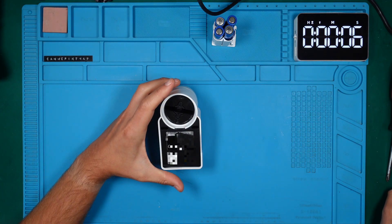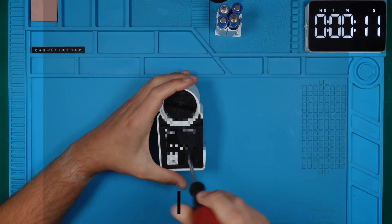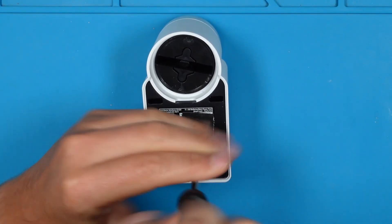To open this bad boy, it is enough to grab a Phillips head screwdriver. We see one screw on the back side of the lock. Let's remove it.